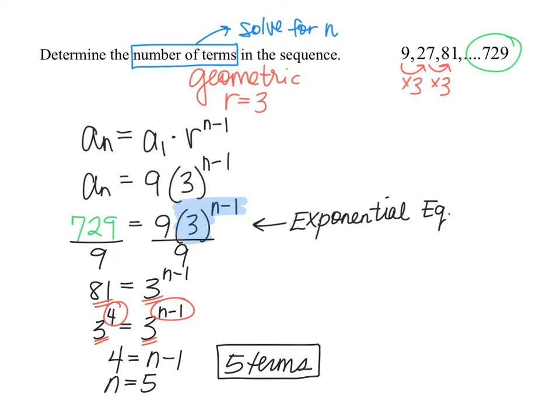But this is the process we would use especially if the last term was a really ugly number, maybe a very small decimal or maybe a very large number. It would not be very efficient to multiply by 3 repetitively 29 times, let's say, if we were looking for the 29th term.